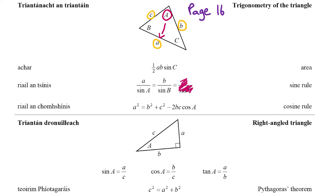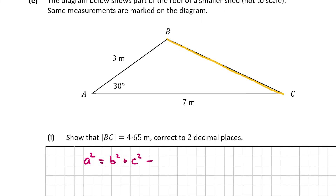The cosine rule uses three sides — small a, b, and c — and one angle, capital A. We have one angle and two sides b and c, and we're finding side a (which is BC, opposite the angle). The key requirement is that b and c are the two sides between the angle. Looking at our triangle, the 30-degree angle is between the sides of 3 meters and 7 meters, confirming we can use the cosine rule.